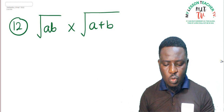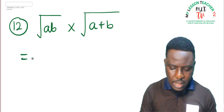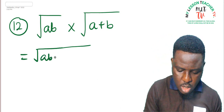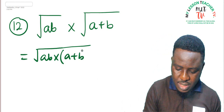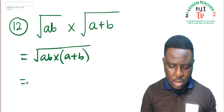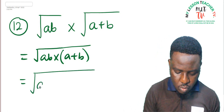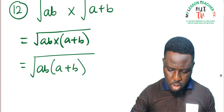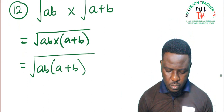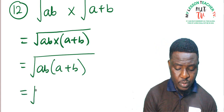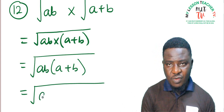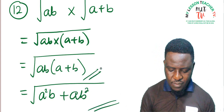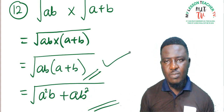Question 12: root (ab) times root (a + b). Following the law of surds, this becomes root of ab times (a + b). Expanding inside: ab multiplied by every term in the bracket gives a²b + ab². You can leave the answer as root (ab(a+b)) or as root (a²b + ab²), whichever is the most simplified form.